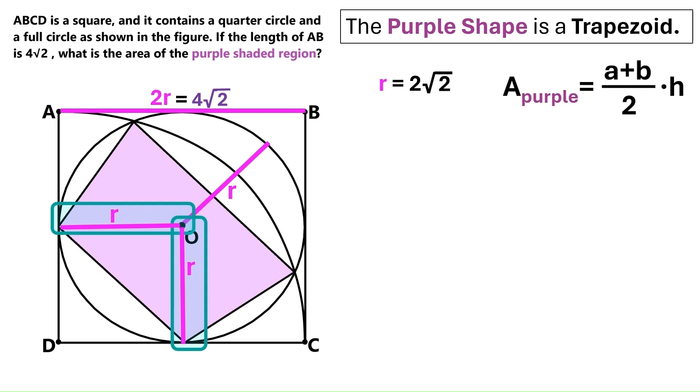Next, we draw these two radii here, and these two angles are right angles, because they are at the points of tangency, and this is a right angle too, because it's in the corner of the square. We can conclude that we've got a square here, and this line is its diagonal.